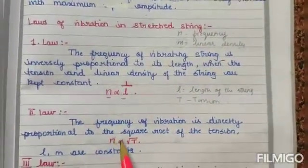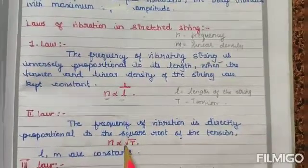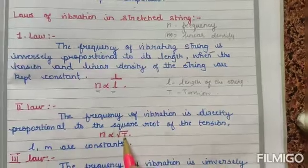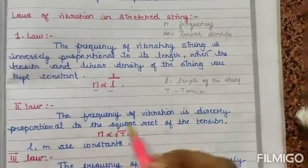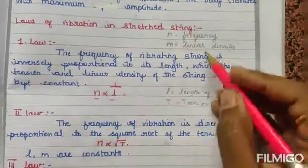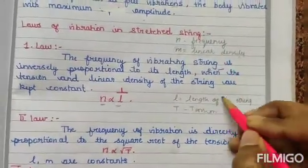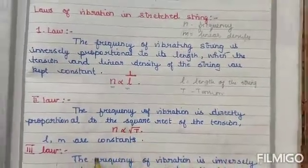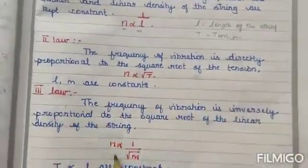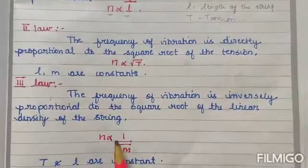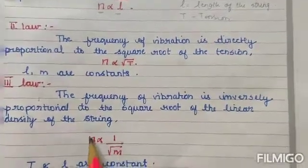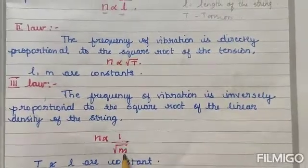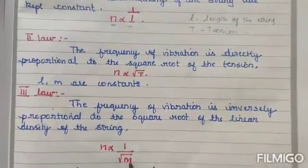For the Second Law, frequency is directly proportional — there is no division sign — directly proportional to the square root of T, where T is tension. So if n depends on T, then L and M are constants.